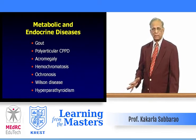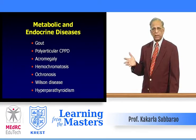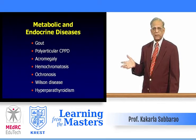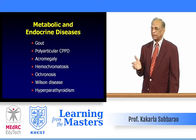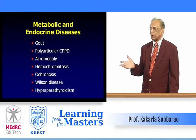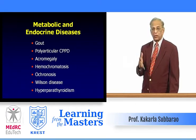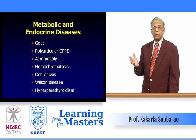Metabolic and endocrine causes include gout and polyarticular calcium pyrophosphate deposition disease (CPPD). Acromegaly, hemochromatosis (iron overload), ochronosis (alkaptonuria), Wilson's disease due to copper deficiency, and hyperparathyroidism may also produce joint changes.